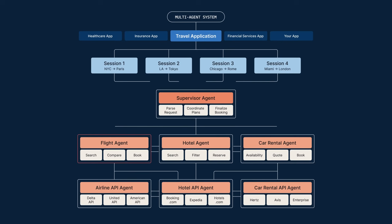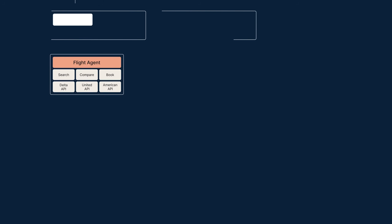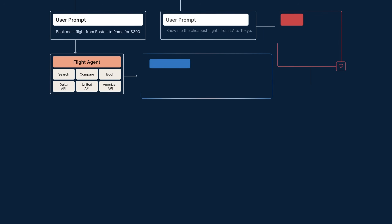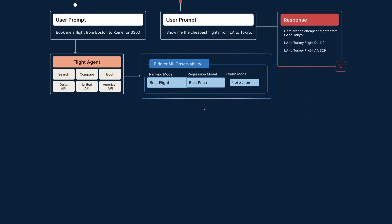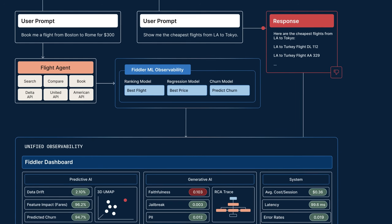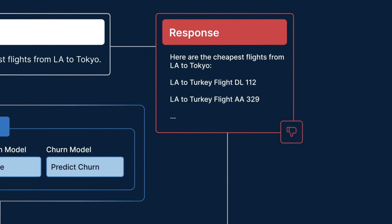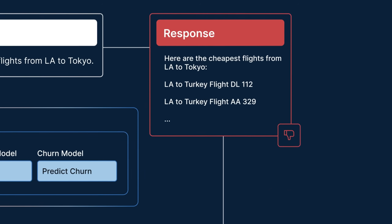Fiddler agentic observability tracks every user session and every tool call, from the app through sessions, traces, and spans, mapping its journey through your agentic hierarchy. See precisely where probabilistic reasoning leads to unexpected outcomes, like looking up flights to Turkey instead of Tokyo.